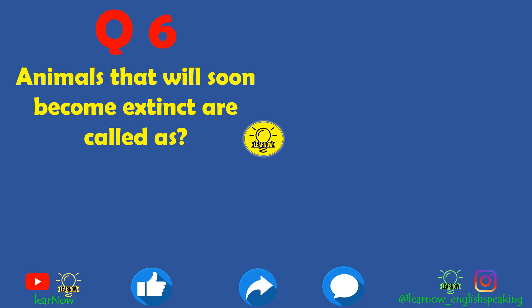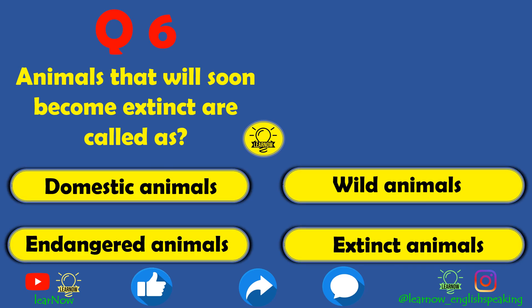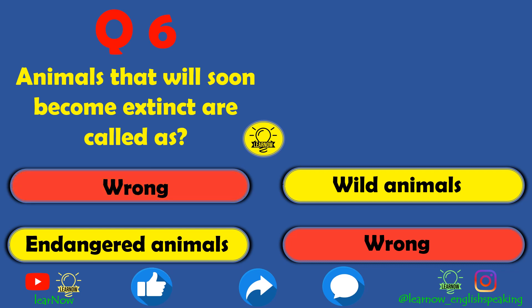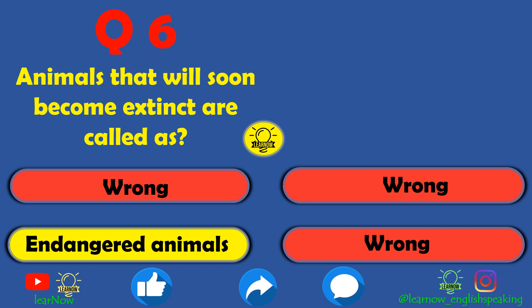Question number six: animals that will soon become extinct are called what? The options are domestic animals, wild animals, endangered animals, or extinct animals. Extinct animals, domestic animals, and wild animals are all wrong. The correct answer is endangered animals — animals which will soon become extinct are called endangered animals.